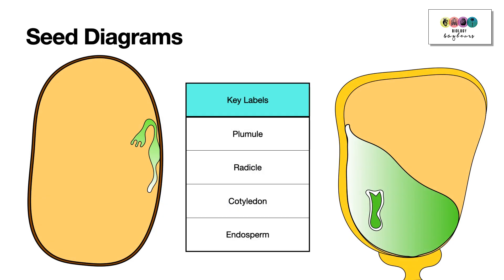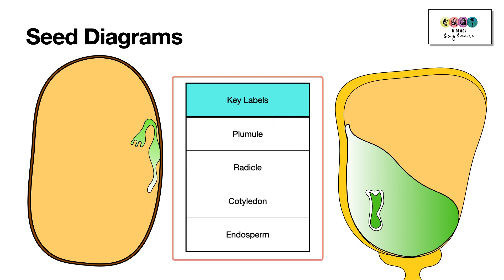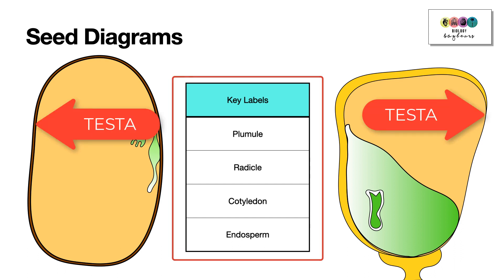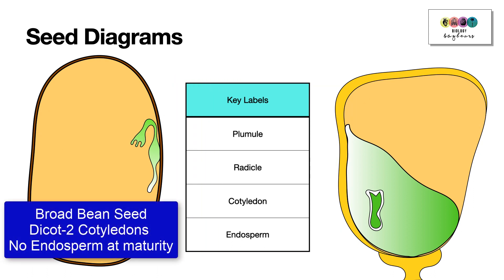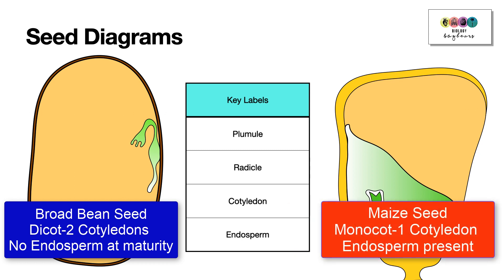With seed diagrams it's exactly the same case — there are key labels you have to identify: the plumule, the radical, the cotyledon, the endosperm, and the testa, the outer coating of the seed. The broad bean seed on the left is a dicot — it has two cotyledons but only one is visible — and it's non-endospermic. The maize seed on the right is a monocot with one cotyledon and it is endospermic.